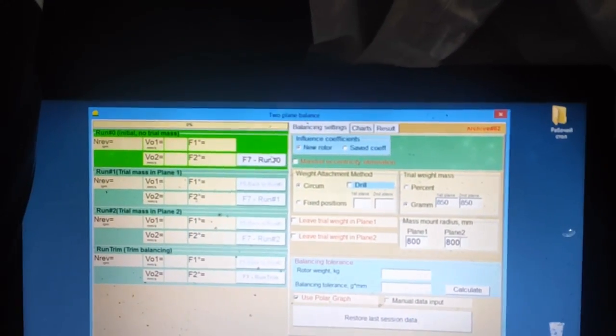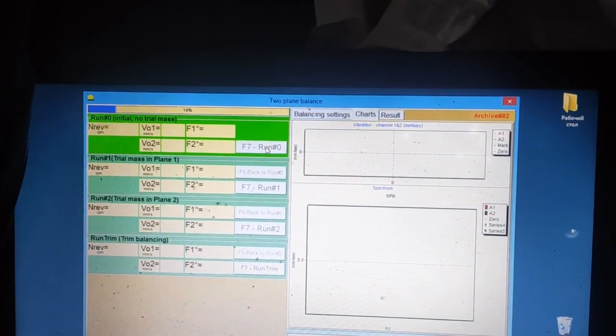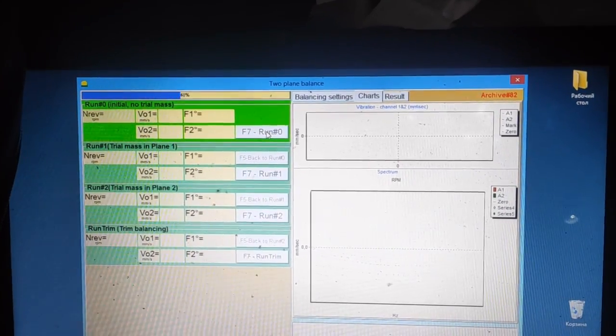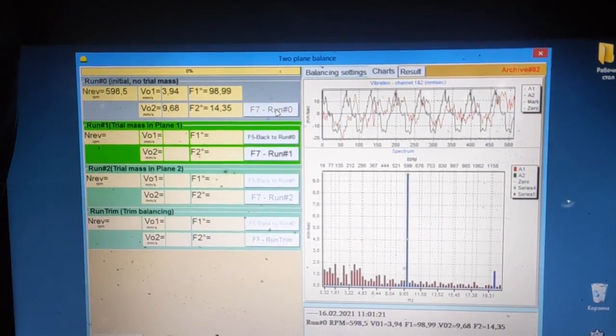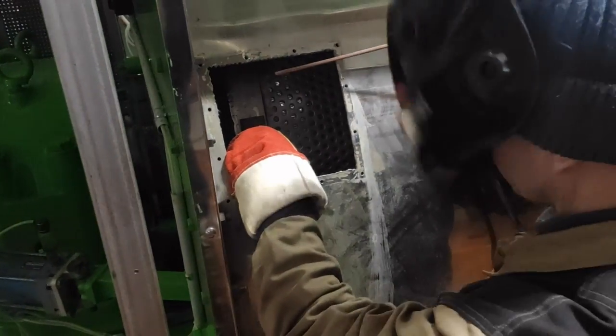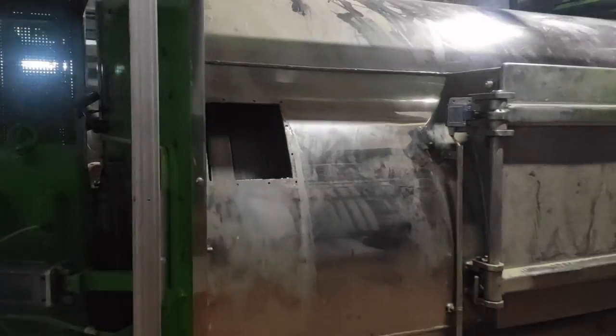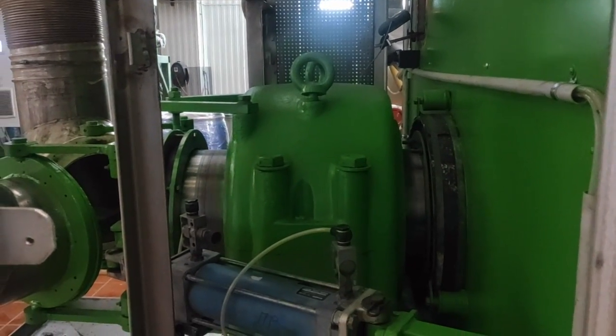Perform a first run and measure the initial vibration level. Place a test weight on the first plane, on the side where sensor number 1 is located. Measure the vibration. The vibration level or phase should change by at least 20%.